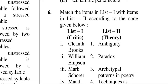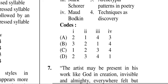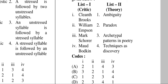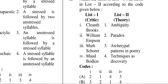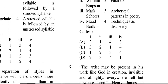Question six is quite long so I'll reveal the correct answers directly. Number one is Cleanth Brooks, related to paradox. Number two is William Empson, related to ambiguity. Number three is Mark Schorer, and number four is Maud Bodkin, related to archetypal patterns in poetry.